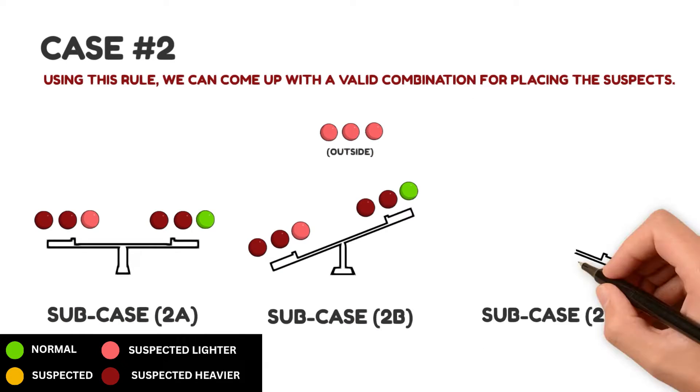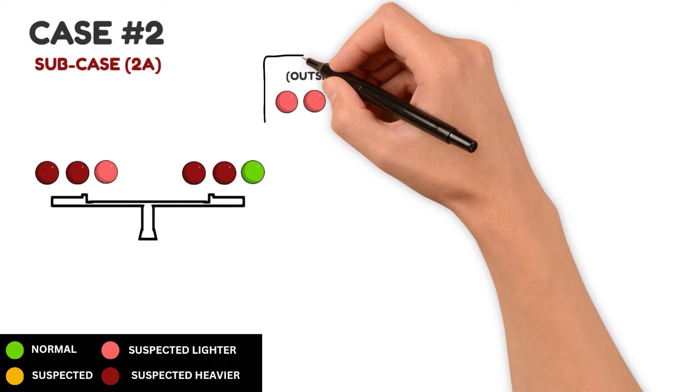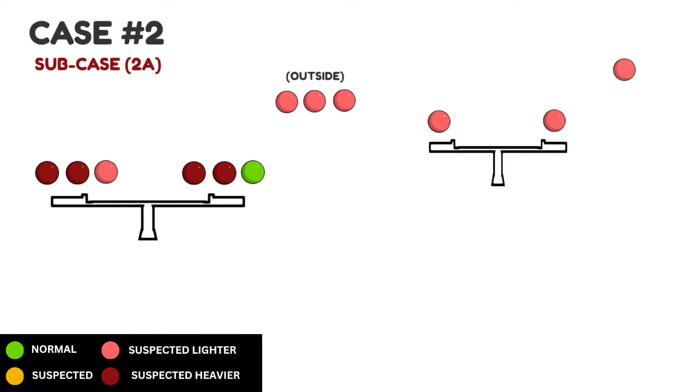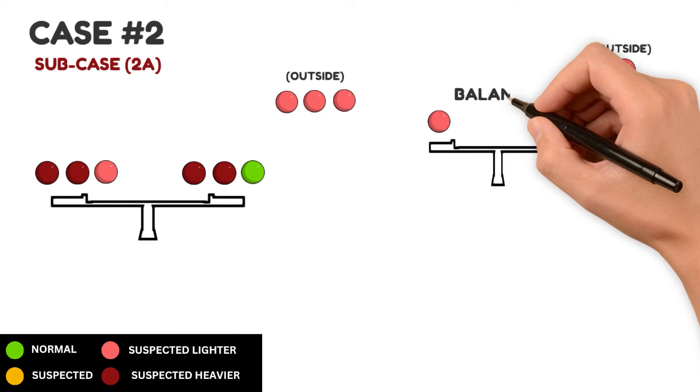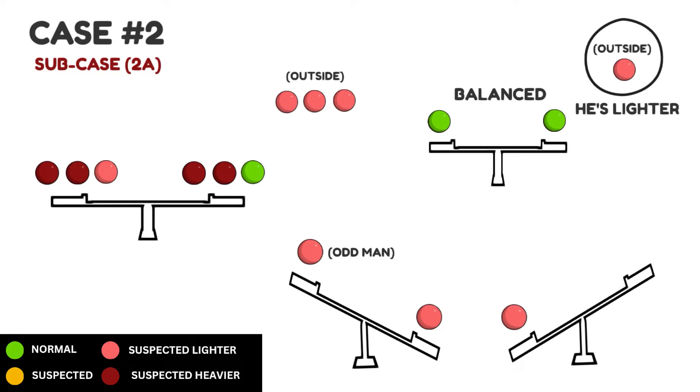If they balance, then the odd man must be one of the 3 lighter suspects outside. So during the third round, we match 2 of them against each other. If they balance, they're of normal weight and the remaining outsider is the odd man and he's lighter. If they don't balance, then the side that rises has the odd man, who's also lighter.